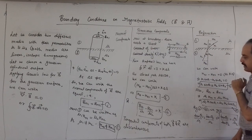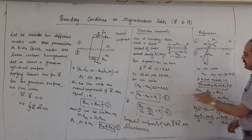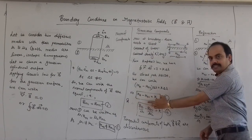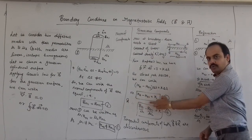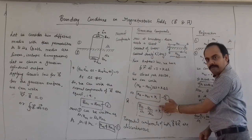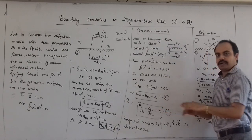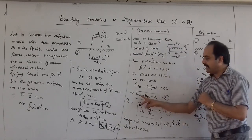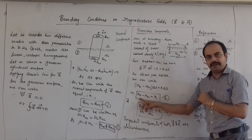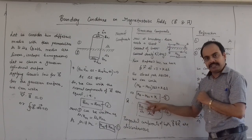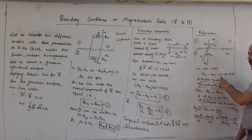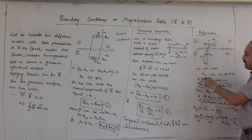From our boundary conditions, Ht1 minus Ht2 equals K. But as surface current is not present, we get Ht1 minus Ht2 equals 0, meaning Ht1 equals Ht2. From the figure, Ht1 equals H1 sin theta 1 and Ht2 equals H2 sin theta 2. So H1 sin theta 1 equals H2 sin theta 2. This is equation number 1.